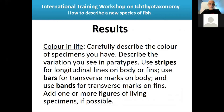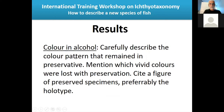For color in life, carefully describe the color of specimens and the variation you see in paratypes. Use 'stripes' for longitudinal lines on body or fins, 'bars' for transverse marks on the body, and 'bands' for transverse marks on fins. Add one or more figures of a living specimen if possible. For color in alcohol or preservative, describe the color pattern that remains and mention any vivid colors lost with preservation. Include figures of preserved specimens, preferably the holotype.